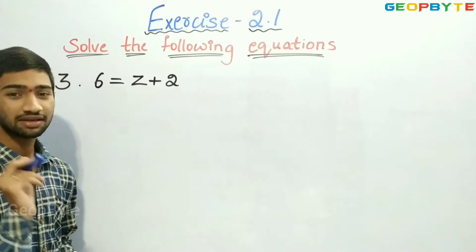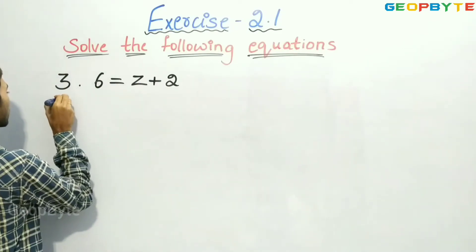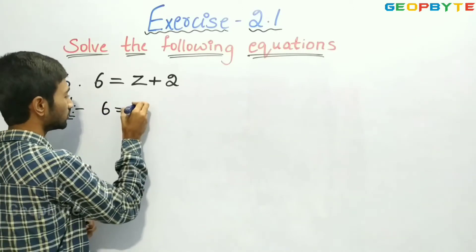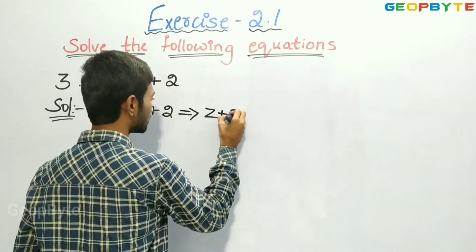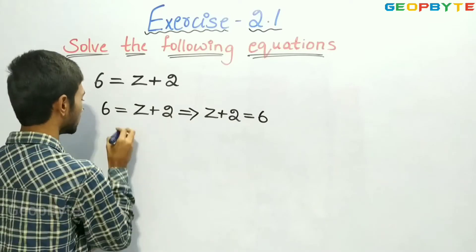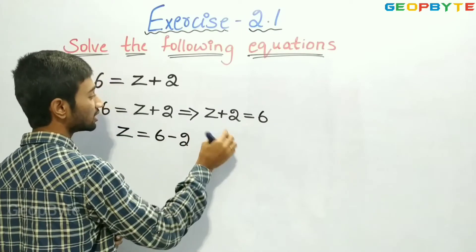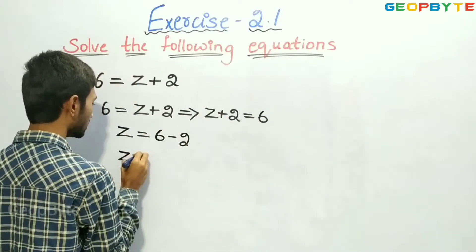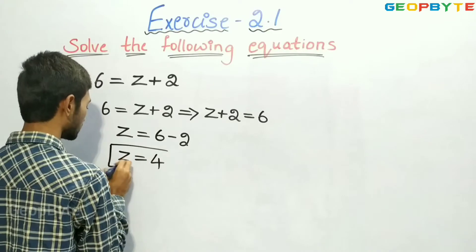Now let us see the third question: 6 is equal to z plus 2. The given equation is 6 equal to z plus 2. This equation can also be written as z plus 2 is equal to 6. So, we need to find the value of z. z is equal to 6 minus 2. Here, plus 2 goes to the right-hand side and becomes minus 2. So, z is equal to 4.